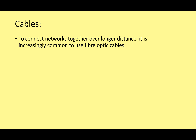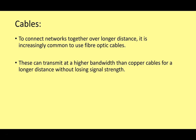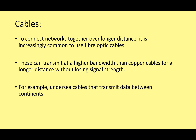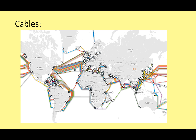For connecting networks together over longer distances - wide area networks - we use fibre optic cables. These can transmit at higher bandwidth than copper cables over longer distances without losing signal strength. For example, all the undersea cables connecting different continents of the world use fibre optic. There are major fibre optic connections around the world - undersea cables connecting the United States and Europe, and Asia to America under the Pacific - and this is how data is sent around the world.